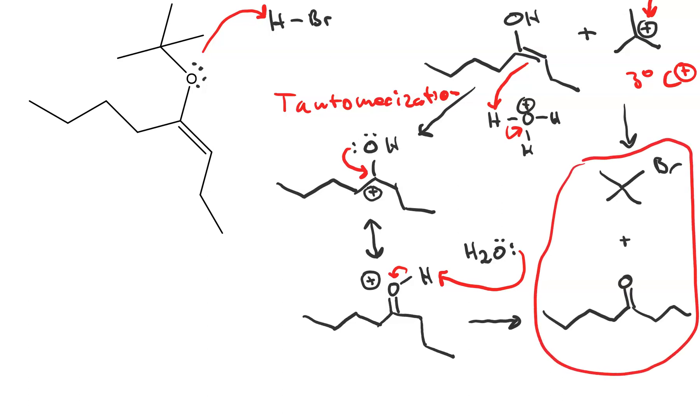We end up with the tertiary alkyl bromide and the ketone. The ketone comes from the alkene fragment.